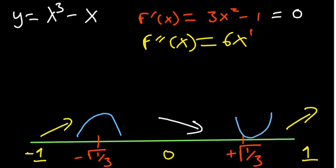The point where the two parts of the curve join is the point of inflection, which occurs where the second derivative equals zero. Setting 6x equal to zero gives x equal to zero. So x equals zero is the point of inflection. With this information you should be able to sketch the curve.